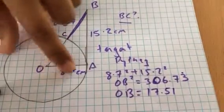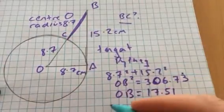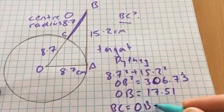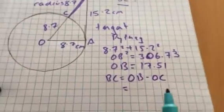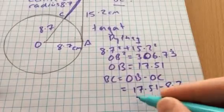So since this is a radii, it's 8.7. So that's also 8.7. So then BC is OB minus the radius of OC, so it's 17.51 minus 8.7, which equals?